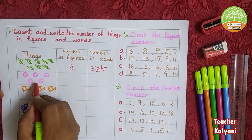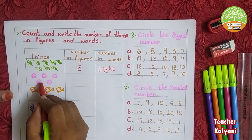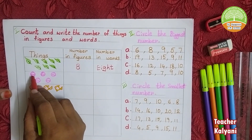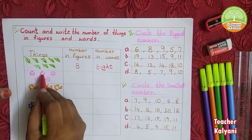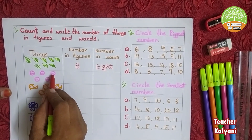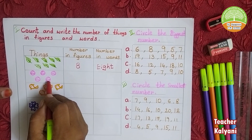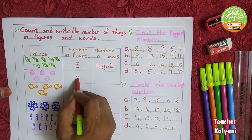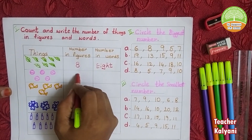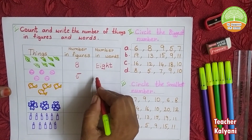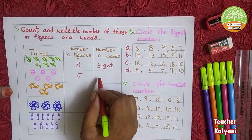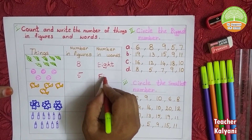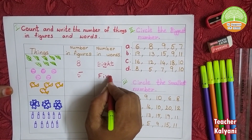Next one, we count balls: 1, 2, 3, 4, 5. Okay, 5. Number in word: F, I, V, E.